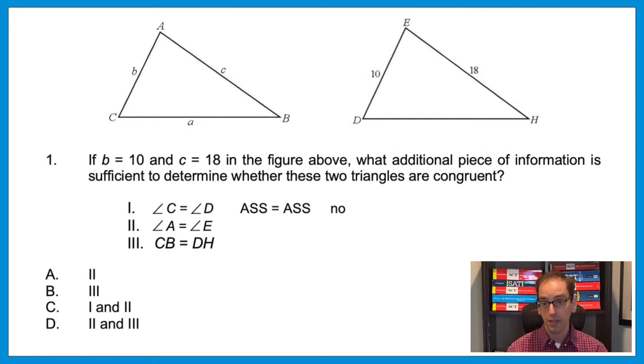So statement one doesn't work. Now in statement two, if angle A equals angle E, would that help us? Well, let's look at that. The triangle on the left, moving clockwise from side B, means we would have a side-angle-side. And now starting on the right with the 10, also side-angle-side. And that works—side-angle-side can be used to prove the triangles are equal.